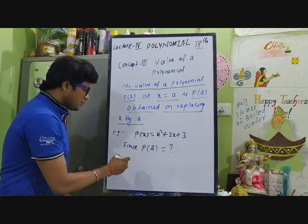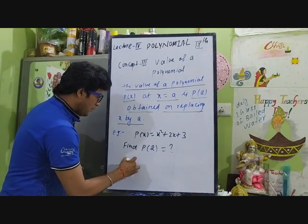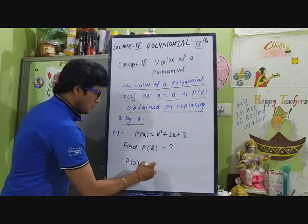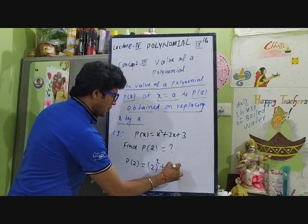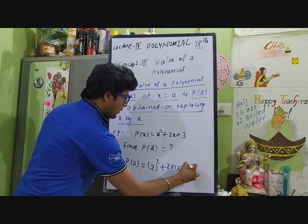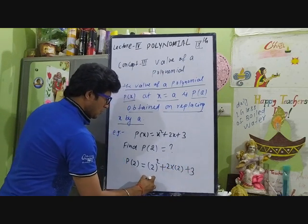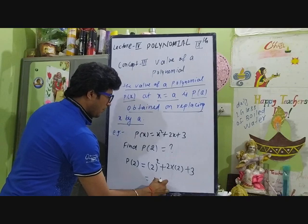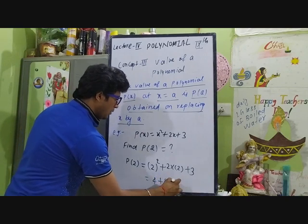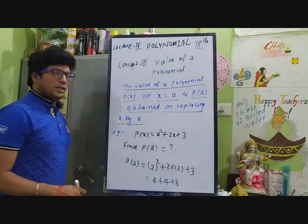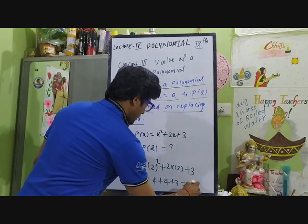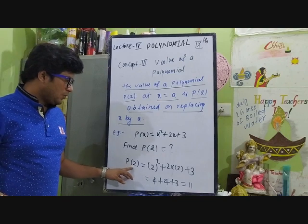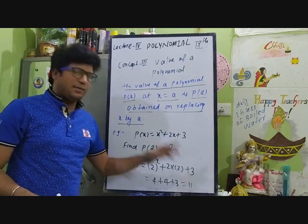So p(2) = 2² + 2(2) + 3 = 4 + 4 + 3 = 11. So if you substitute 2, this polynomial value is 11.